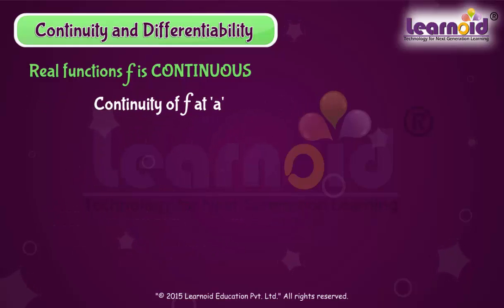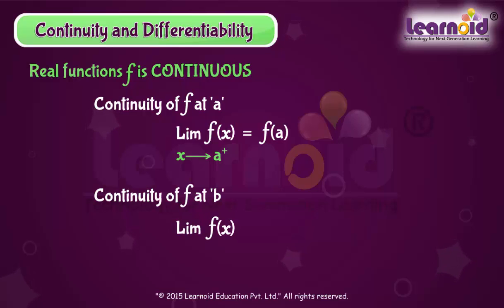Continuity of f at a means limit of f(x) at x tends to a plus is equal to f(a). Similarly, continuity of f at b means limit of f(x) at x tends to b minus is equal to f(b).